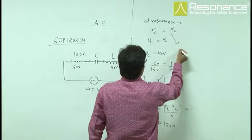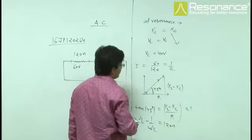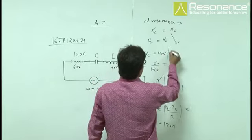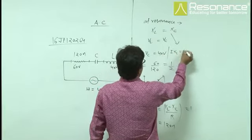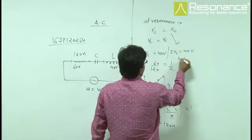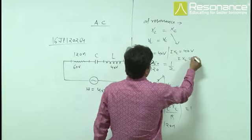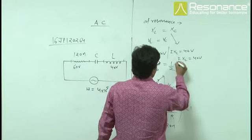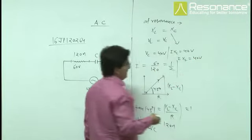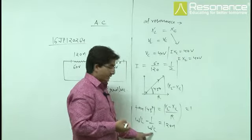we can find the value of here, I times XC equals 40 volt and I times XL equals 40 volt. So, we can get the value of L and C and by putting here,